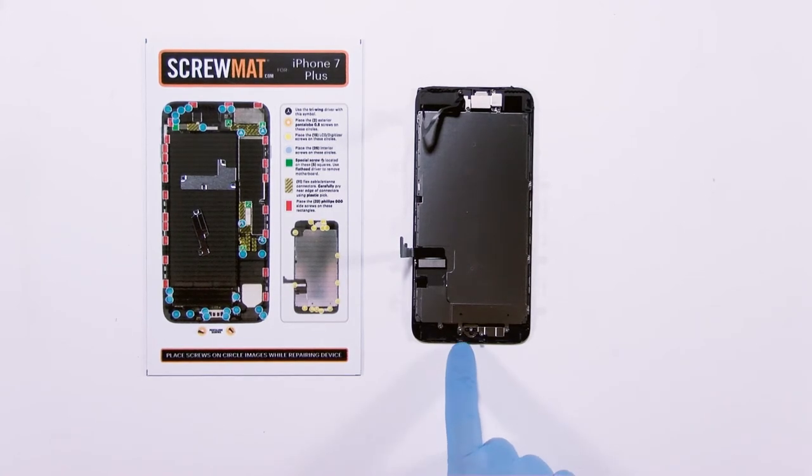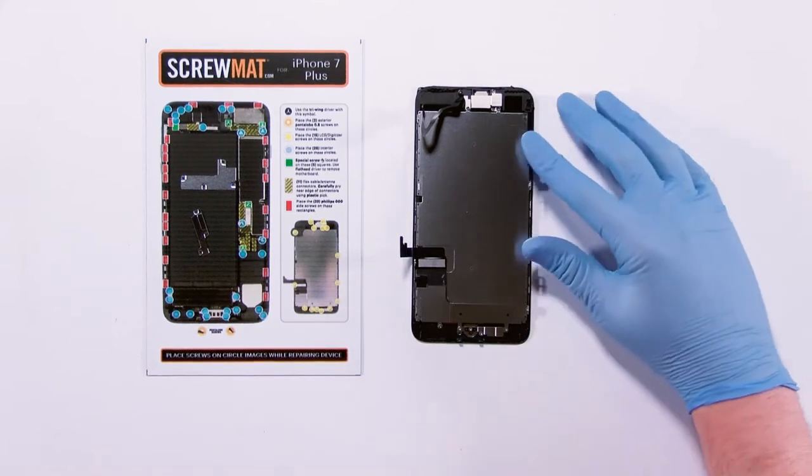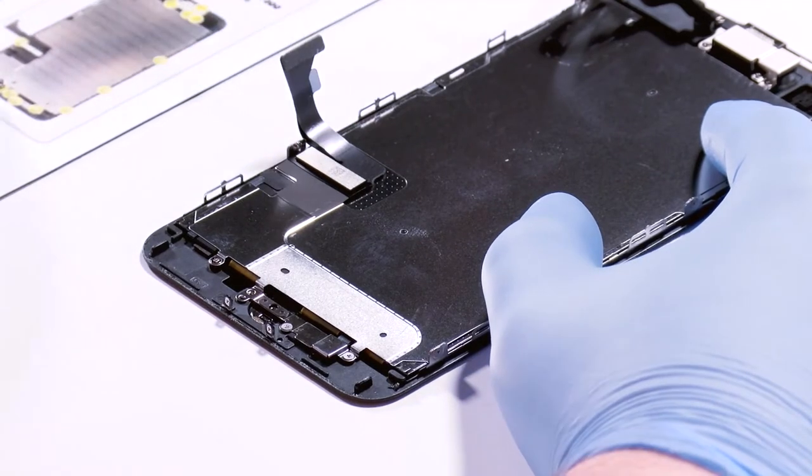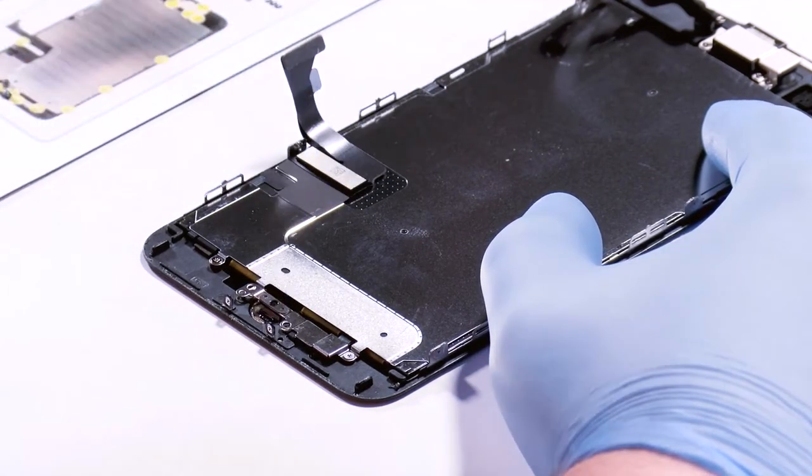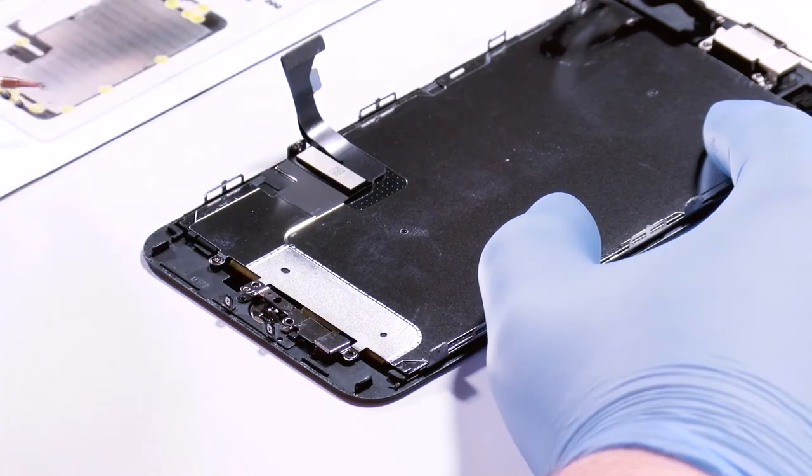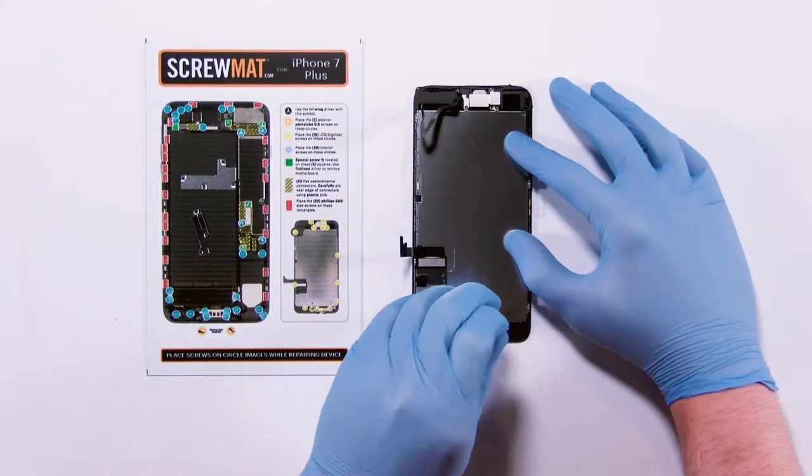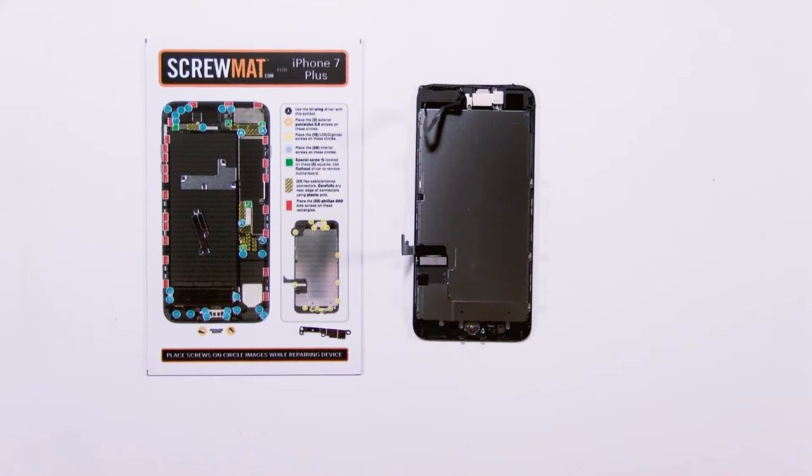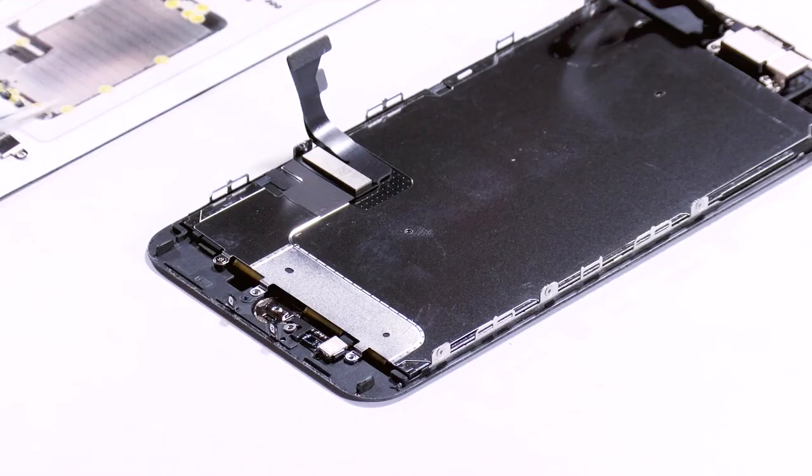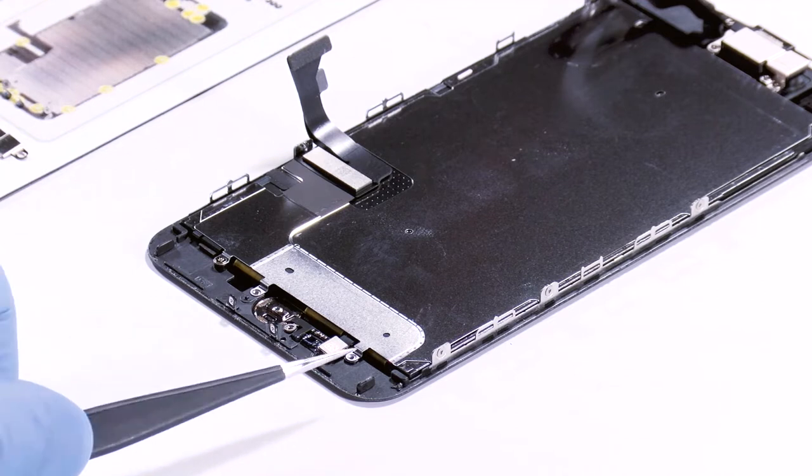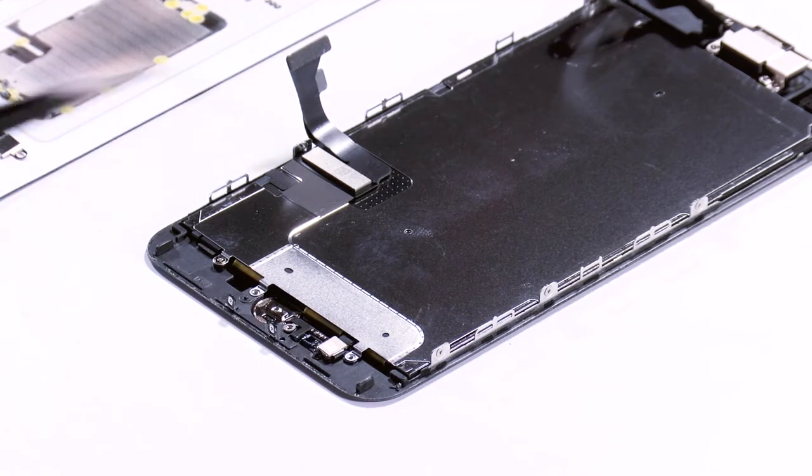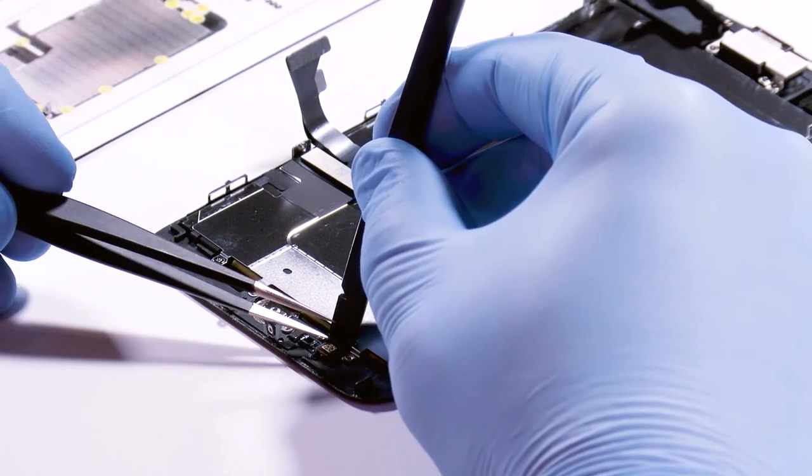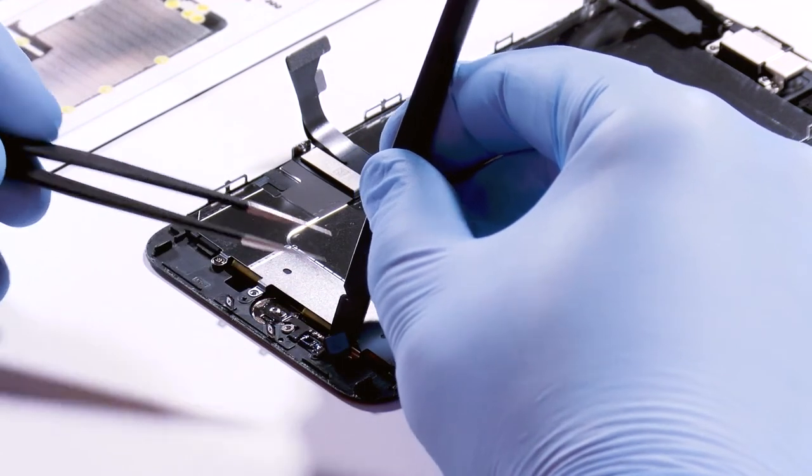To get your home button out you're going to take out your four screws down here. Now the home button actually runs right here and then wraps up around and plugs into the connector flex on the screen. What I'm going to do is I'm going to use this plastic plate here to hold that flex in place and use my tweezers to unplug it like so.